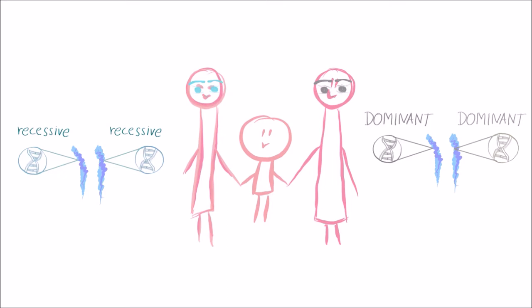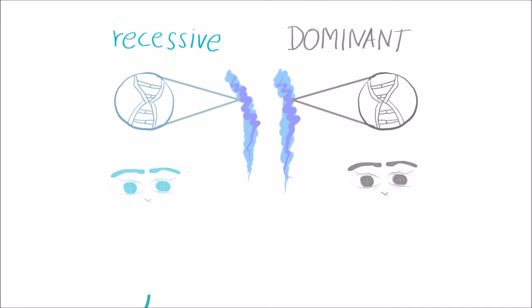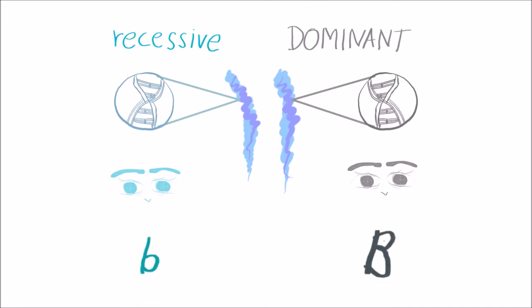The father could either have two dominant alleles, or a recessive and a dominant allele, since they both lead him to having brown eyes. Let's give the allele for blue eyes a lowercase letter, and the allele for brown eyes an uppercase letter, and see what happens if they cross.